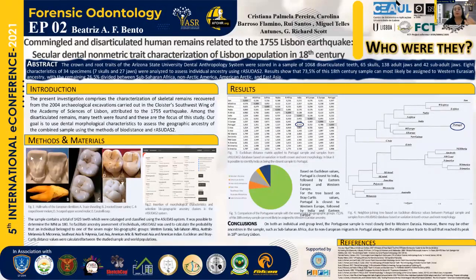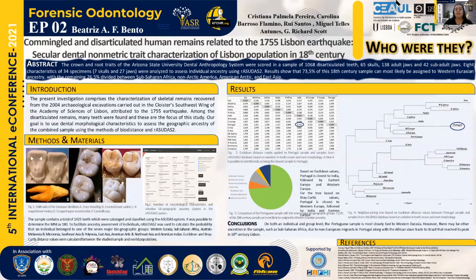Passing now to the results. Using the methods of biodistance from Bray-Curtis and Euclidean distance matrix, cluster analyses were used to generate dendrograms. Here we analyzed the Euclidean distance matrix applied to the Portuguese sample. As you can see in figures three and four, the Portuguese sample is closest to India with a value of 0.721.